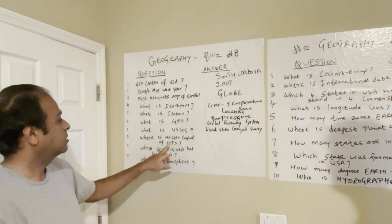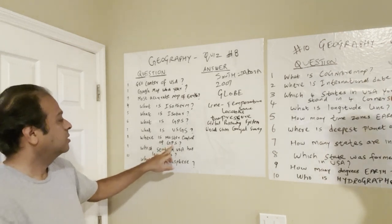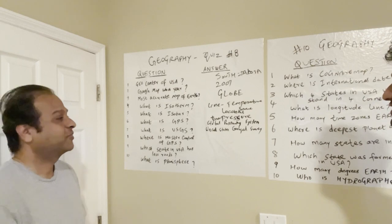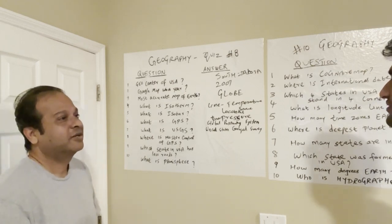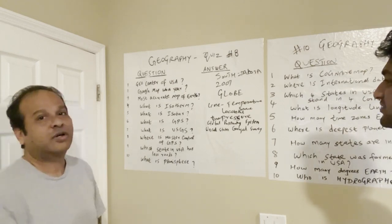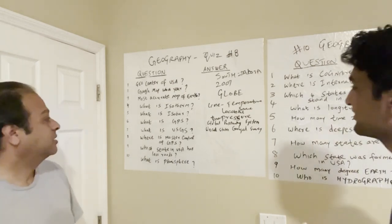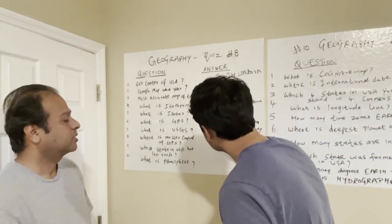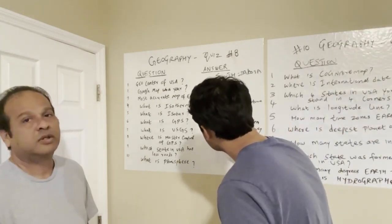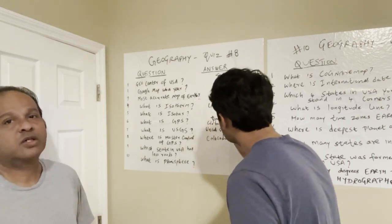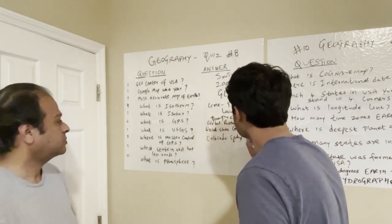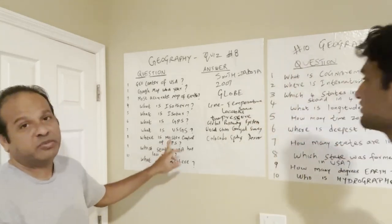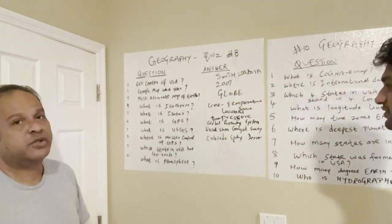Where is the master control of GPS? It is somewhere in the US. Which state? Colorado. It's in Colorado Springs, Denver. It is in Colorado Springs, Denver. That's why they control the GPS — that's the physical location.